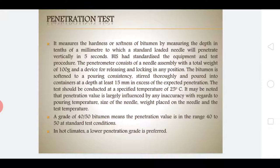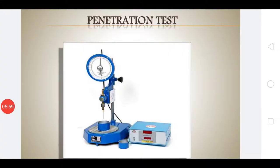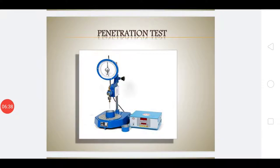The penetrometer instrument includes cups, a dial gauge arrangement with a least count of one-tenth of a millimeter, and operates for five seconds under standard conditions. Modern versions are electronic. The entire arrangement remains the same as the traditional setup.